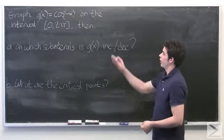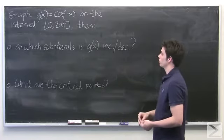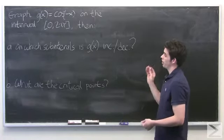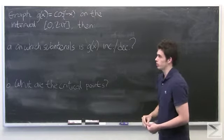In this problem, we are asked to graph g of x equals cosine of negative x on the interval 0 to 2 pi, then use that graph to determine the intervals in which it is increasing and decreasing, as well as the critical points.